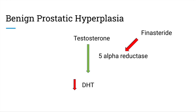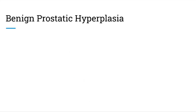Other side effects include erectile dysfunction and decreased libido. This inhibition of 5-alpha reductase causes more testosterone to be available, which can be converted to estradiol and possibly lead to gynecomastia. Finasteride not only treats BPH but can also be used in the treatment of male pattern baldness. In summary, BPH is caused by elevated DHT that drives prostate enlargement, and these DHT levels can be decreased by using 5-alpha reductase inhibitors such as finasteride.